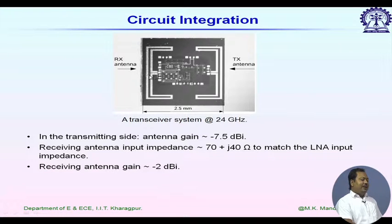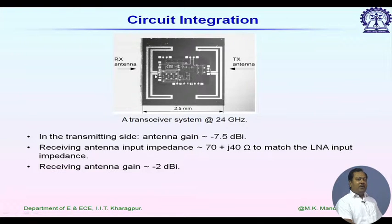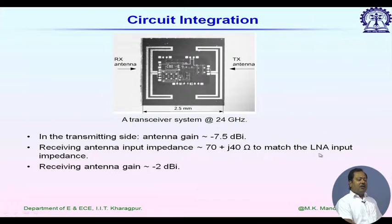Maximum importance is placed on the receiving antenna since received power is very small and must be detected. For this type of antenna, we sometimes don't care about the input impedance being 50 ohm or 100 ohm. Instead, the antenna input impedance should be the complex conjugate of the next stage — the LNA. In this typical application, the receiving antenna input impedance is 70 plus j40 ohm, to match the LNA input impedance, which at the operating frequency is not 50 ohm. We need the complex conjugate to transfer maximum power from the antenna to the LNA.